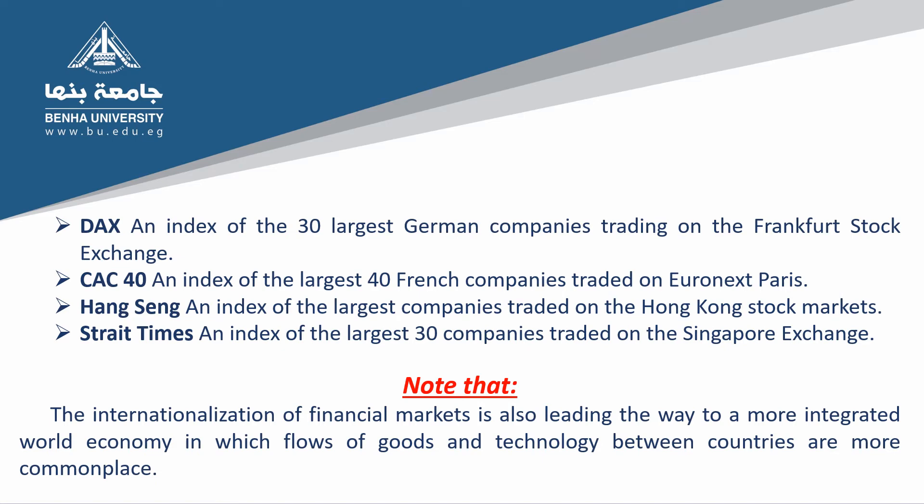Fifth, the DAX, an index of the 30 largest German companies trading on the Frankfurt Stock Exchange. Sixth, the CAC 40, an index of the largest 50 companies traded in Paris. Seventh, the Hang Seng, an index of the largest companies traded in the Hong Kong stock market. Eighth, the Straits Times, an index of the largest 50 companies traded on the Singapore Exchange. Note that the internationalization of financial markets is also leading to a more integrated world economy in which flows of goods and technology between countries are more commonplace.